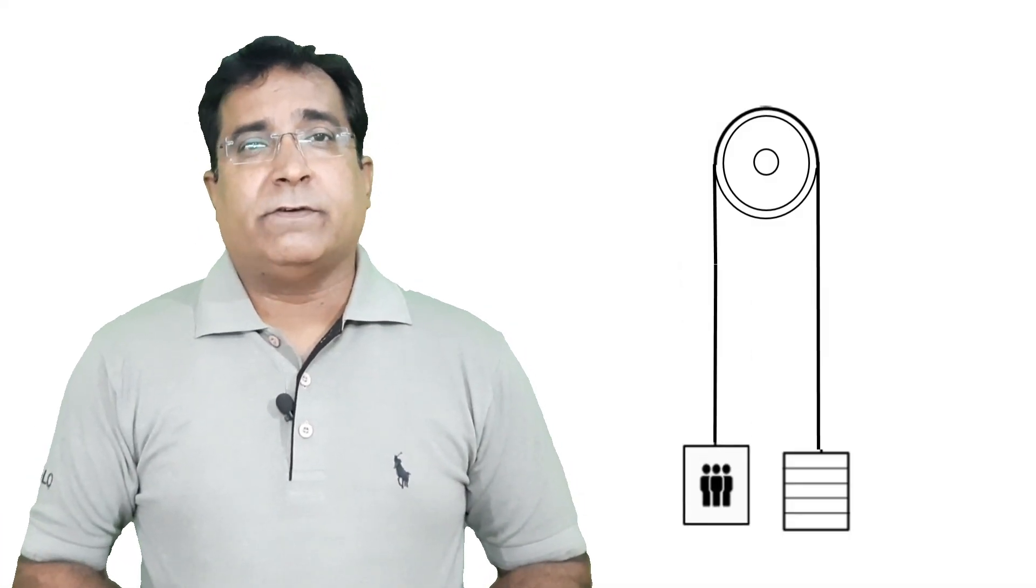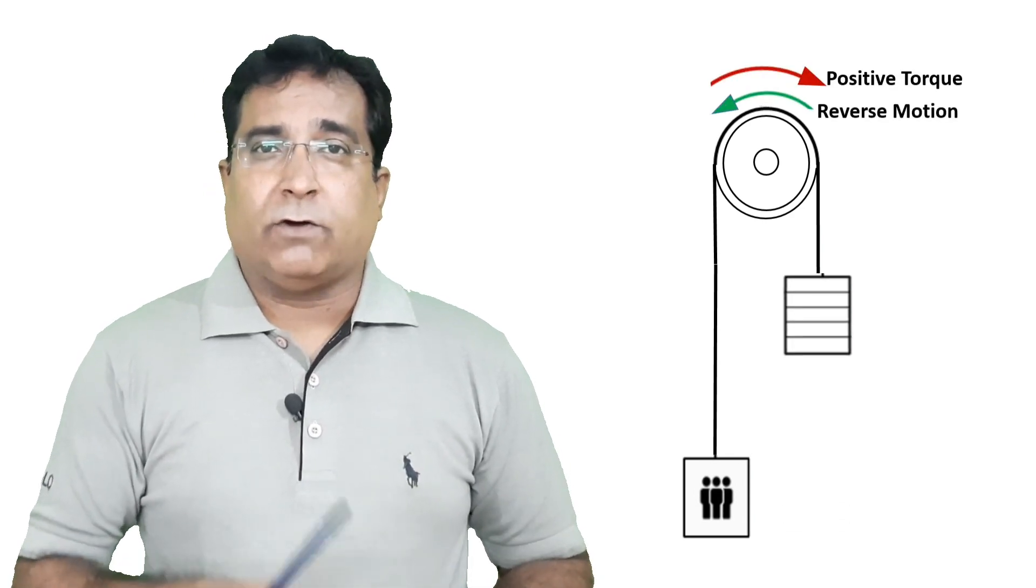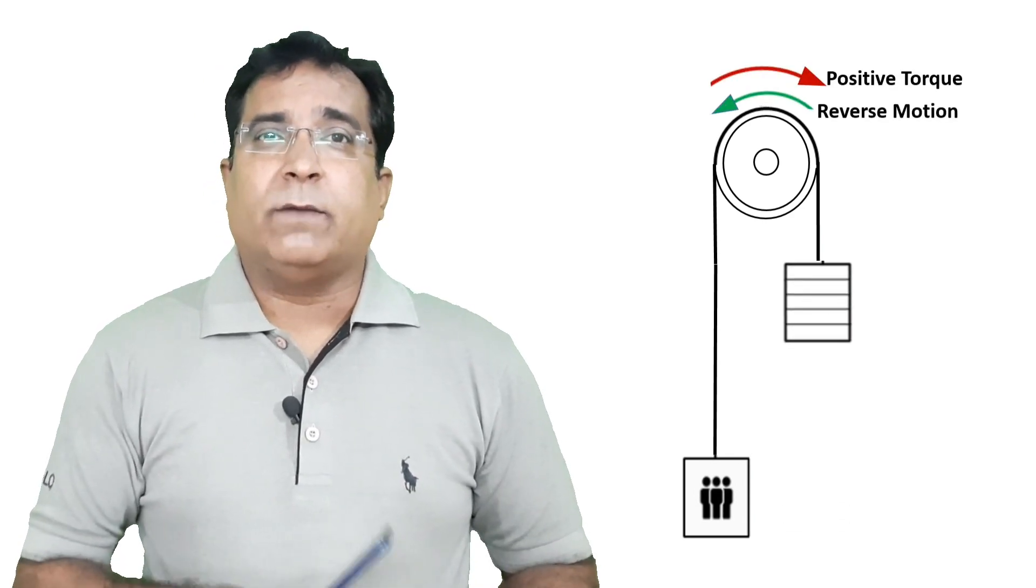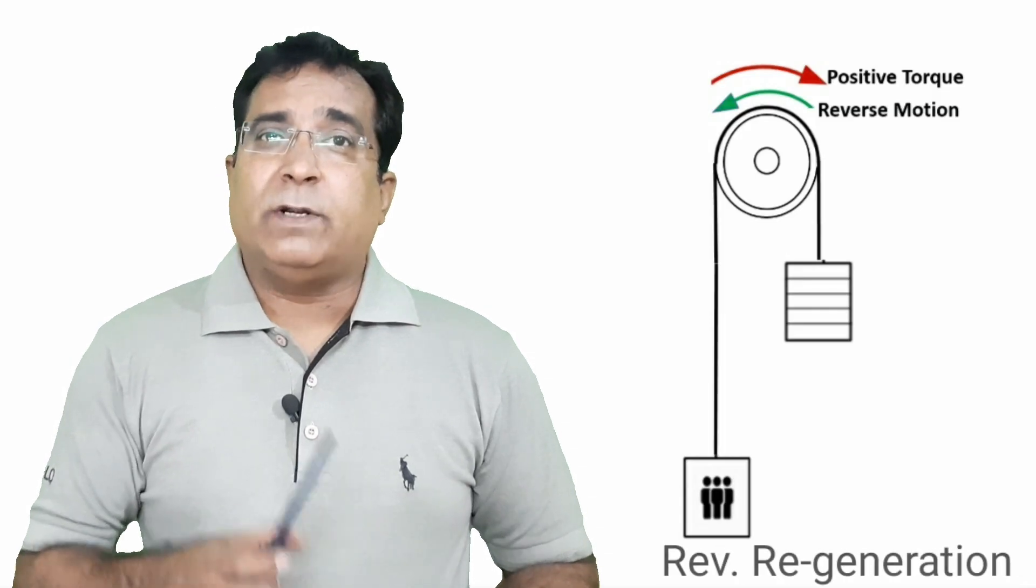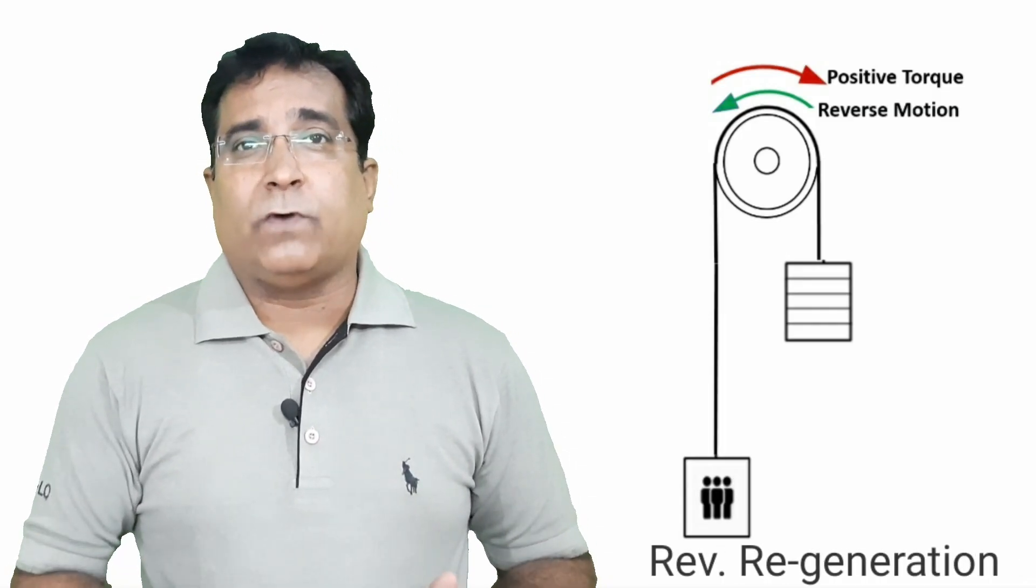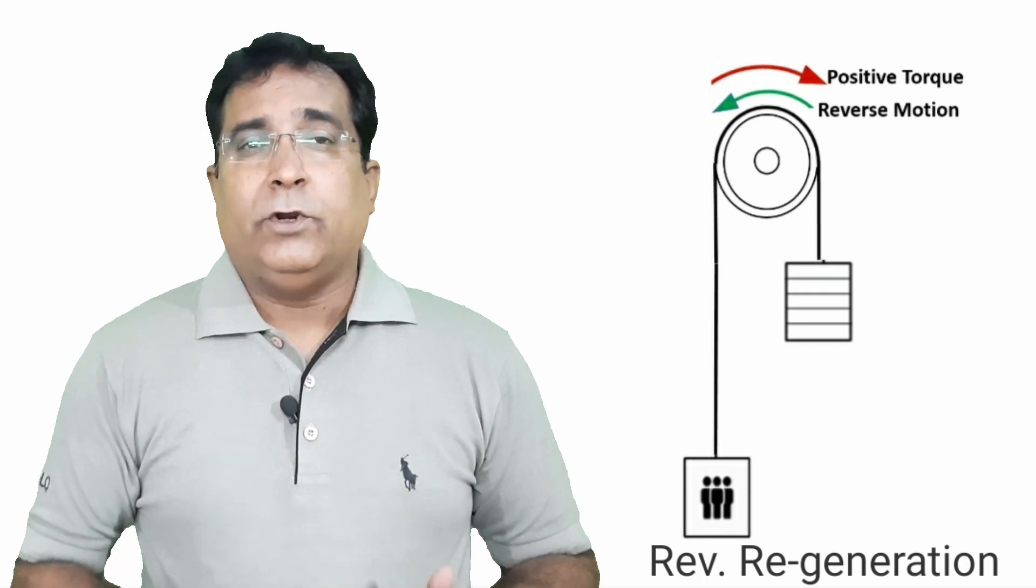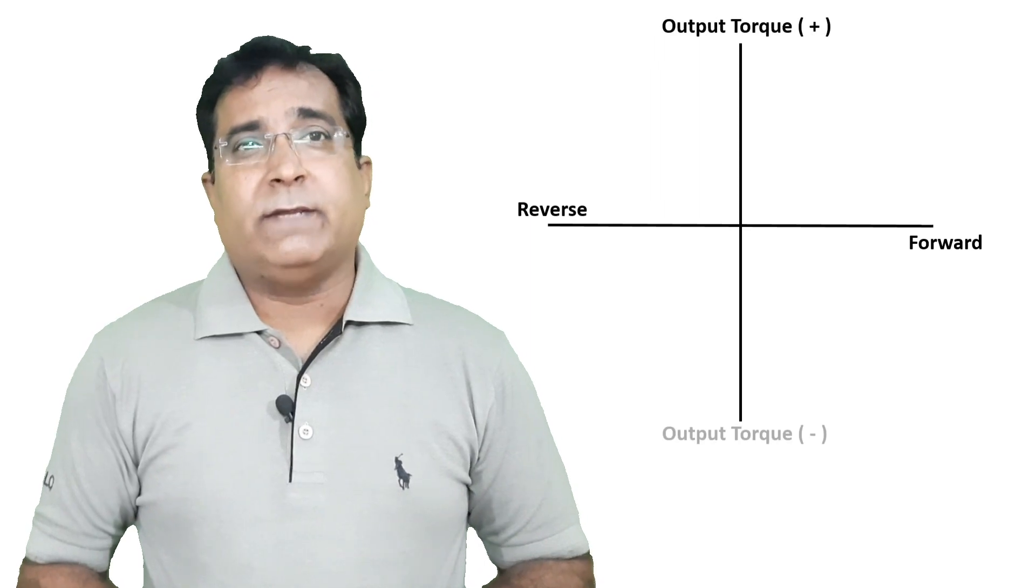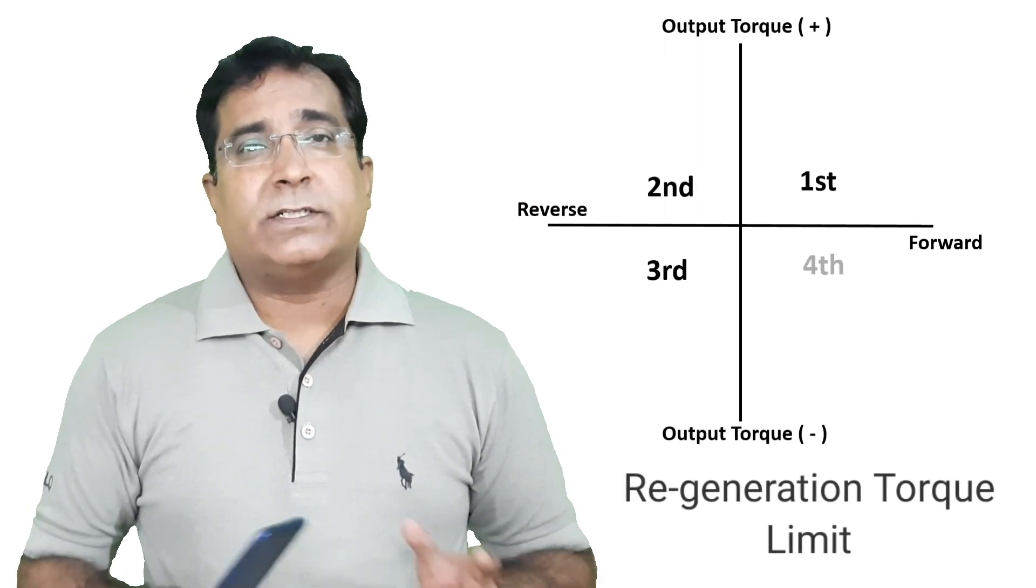Now let us check out the first situation when the car is full of passengers and has to come down from top to bottom. Obviously motor needs to be run in reverse direction and the weight of car is more than the counterweight. Again role of gravity comes into picture. The full car will pull the motor so the motor will be in regeneration, but the car is not supposed to fall suddenly on ground due to gravity.